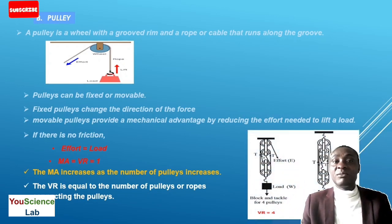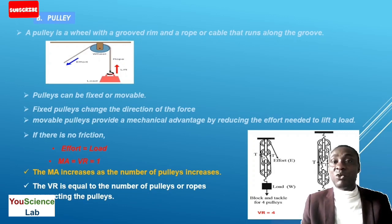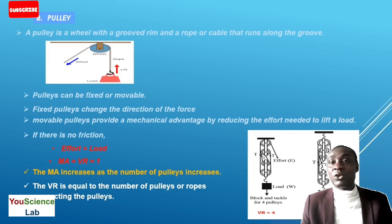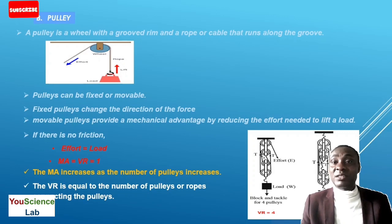Here we have a system of 4 pulleys, which has a velocity ratio of 4 because we have 4 pulleys connected with 4 ropes. On the other side, we have a system of 5 pulleys with a velocity ratio equal to 5 because we have 5 pulleys connected together with 5 ropes.